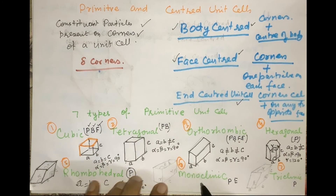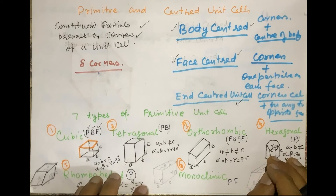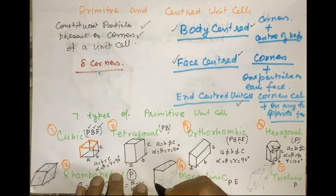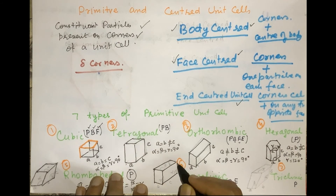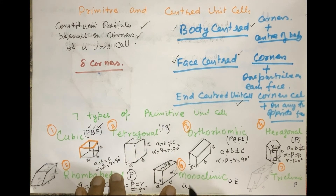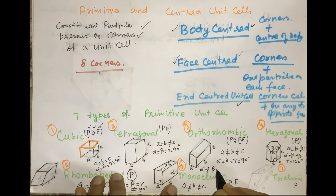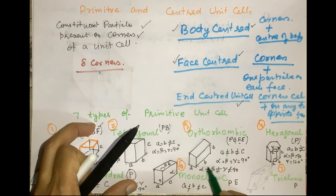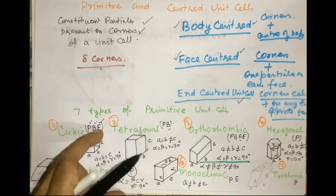The sixth primitive unit cell is monoclinic. In monoclinic, A is not equal to B and is not equal to C — all three edges are different. The angles alpha, beta, and gamma are not all equal. Monoclinic is possible in primitive and end-centered unit cells.